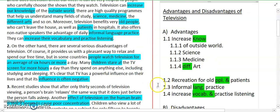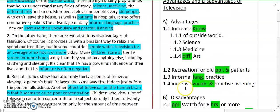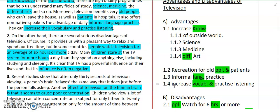The next sub-point is about recreation. Old people and patients who cannot leave their house also need entertainment, and television plays the best role for them. The next sub-point is informal language practice — we can learn many different languages on TV. The fourth sub-point is increasing vocabulary and practicing listening. Television helps us increase our vocabulary and also helps us practice listening.